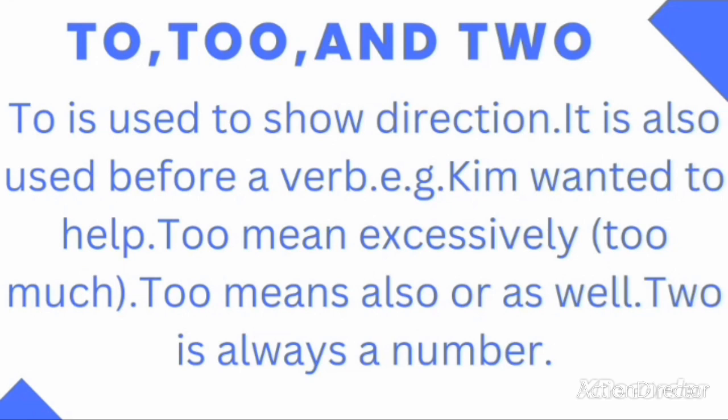Today we'll be looking at a few topics, but first of all let's begin with how we can use to, too, and two. To is used to show direction. It is also used before a verb. For example, Kim wanted to help.